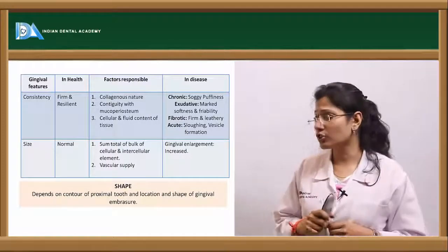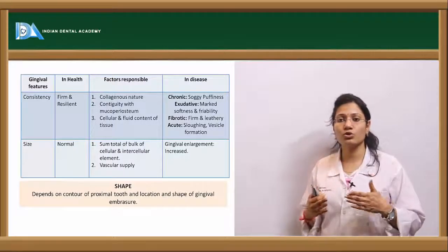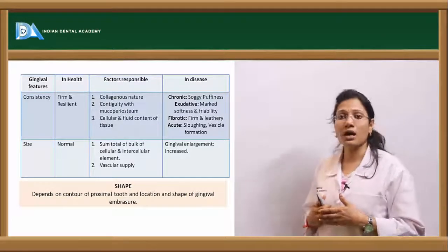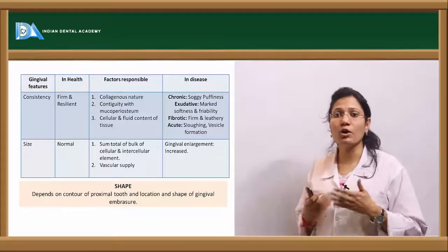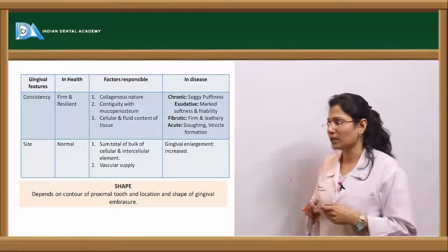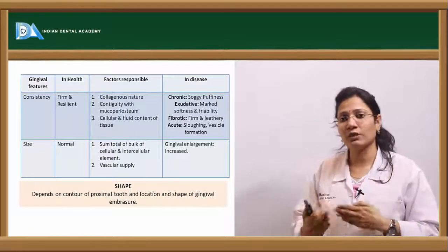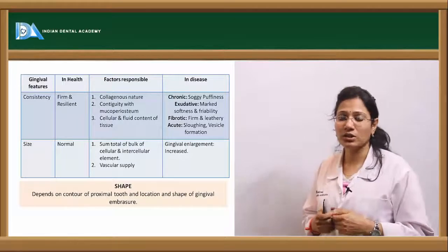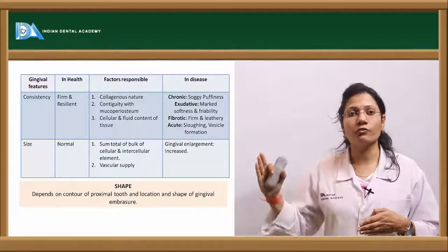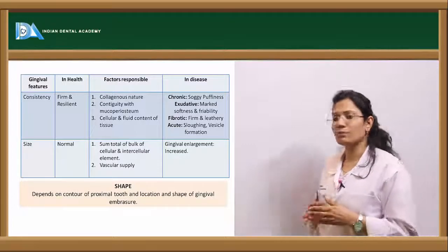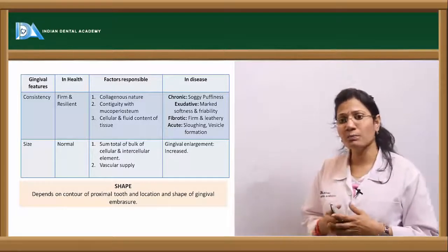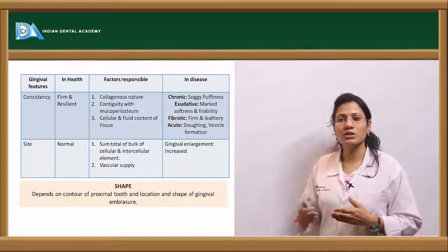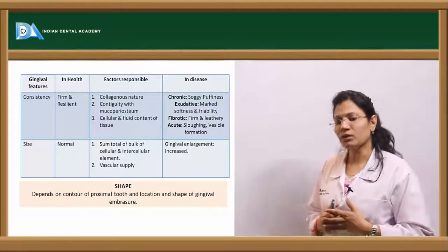In disease — in chronic gingivitis — the consistency changes to soft and puffy. In an exudative condition, you have marked softness and friability, meaning the tissues are more fragile. In fibrotic gingivitis or fibrotic gingival disease, the tissues are firm and leathery in consistency. In acute conditions like ANUG, there is sloughing of the entire epithelium and some connective tissue. In acute primary herpetic gingivostomatitis, there are vesicle formations.